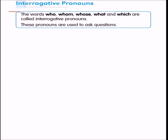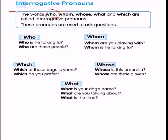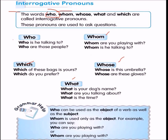Then we have interrogative pronouns — words like who, whom, whose, what, and which. These pronouns are used to ask questions. Examples: 'Who is he talking to?' 'Who are those people?' 'Whom are you playing with?' 'Which of these bags is yours?' 'Whose is this umbrella?' 'What is your dog's name?' 'What are you talking about?' Note: 'who' can be the subject of a verb, while 'whom' is used only as the object.